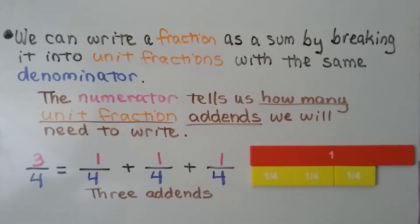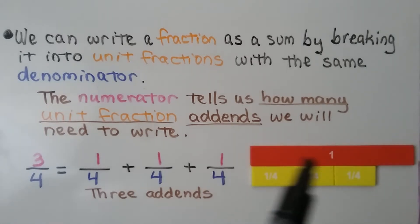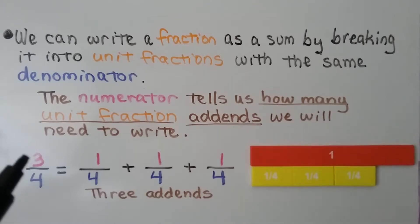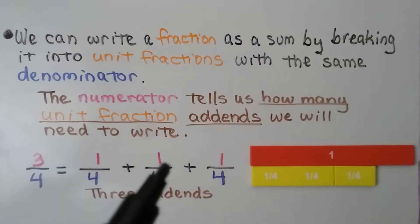So we can write a fraction as a sum by breaking it into unit fractions with the same denominator. The numerator tells us how many unit fraction addends we will need to write. We have 3 fourths — if this is one whole, we have 3 one-fourth parts. The 3 tells us we're going to have 3 addends of unit fractions, and they all have a 1 for a numerator.